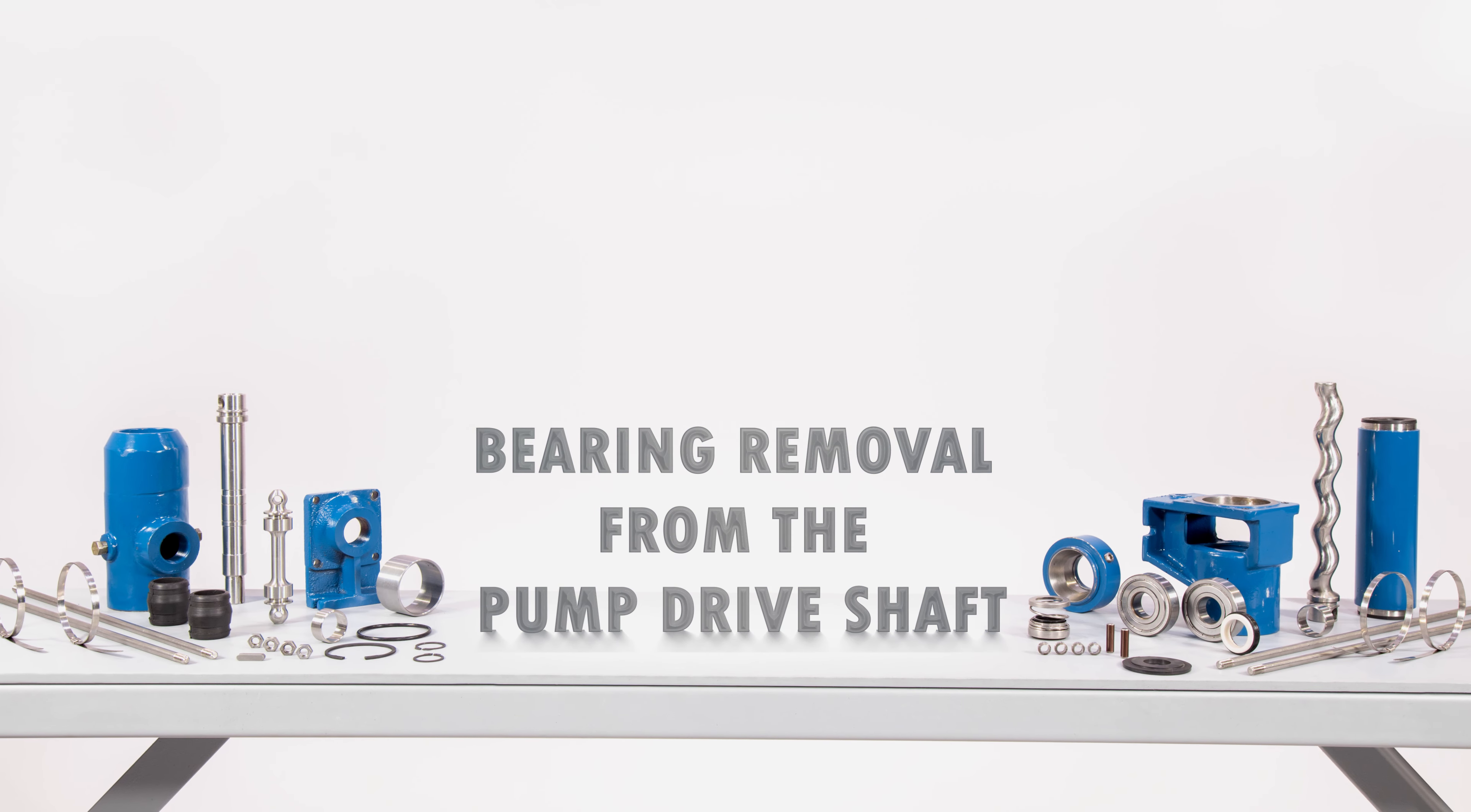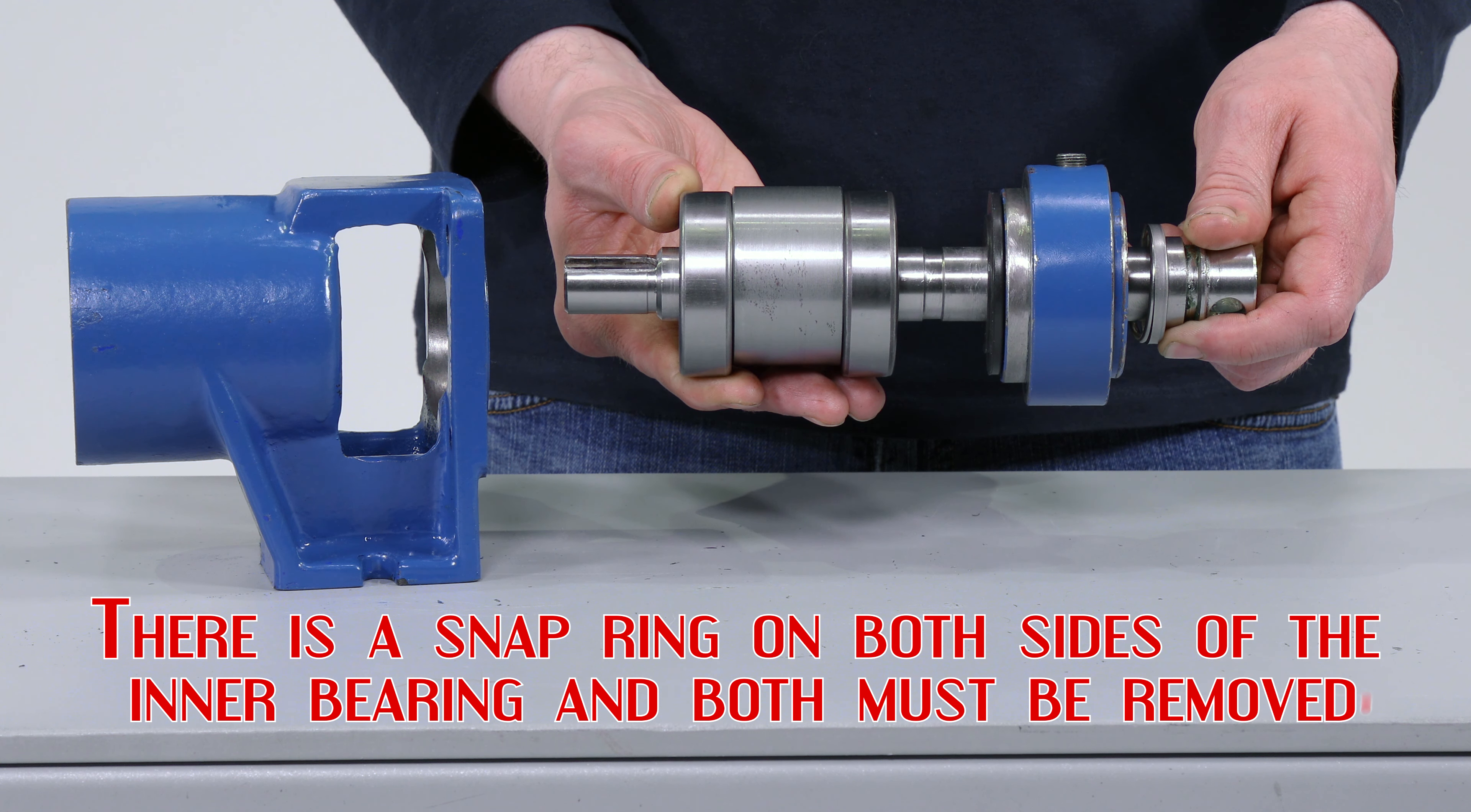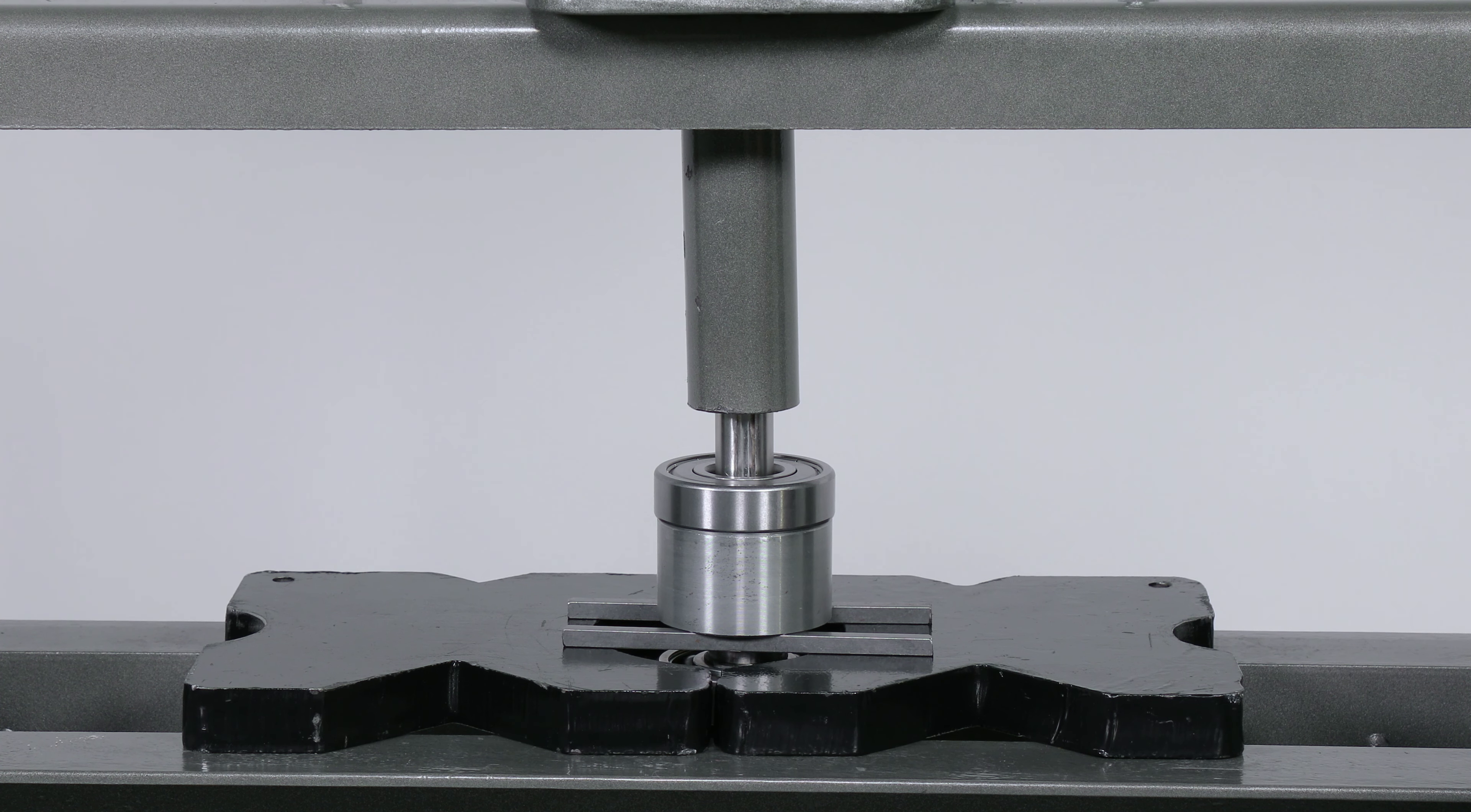Bearing removal from the pump drive shaft. There is a snap ring on both sides of the inner bearing and both snap rings must be removed. If using a sealed spacer, tap the spacer side to side until you have enough room to place the drive shaft in a press and remove the spacer and bearing.